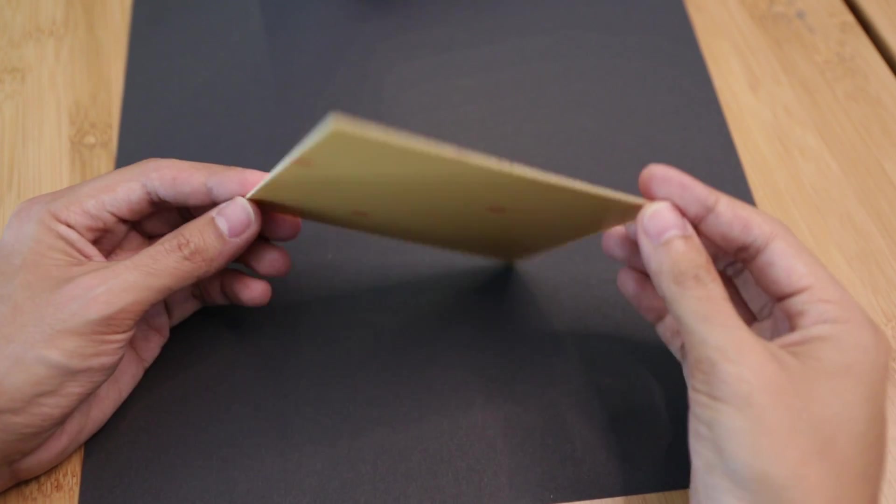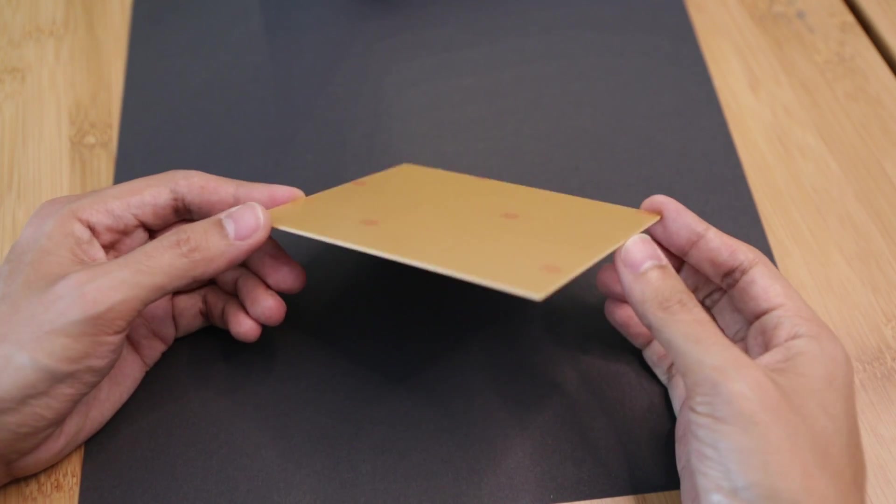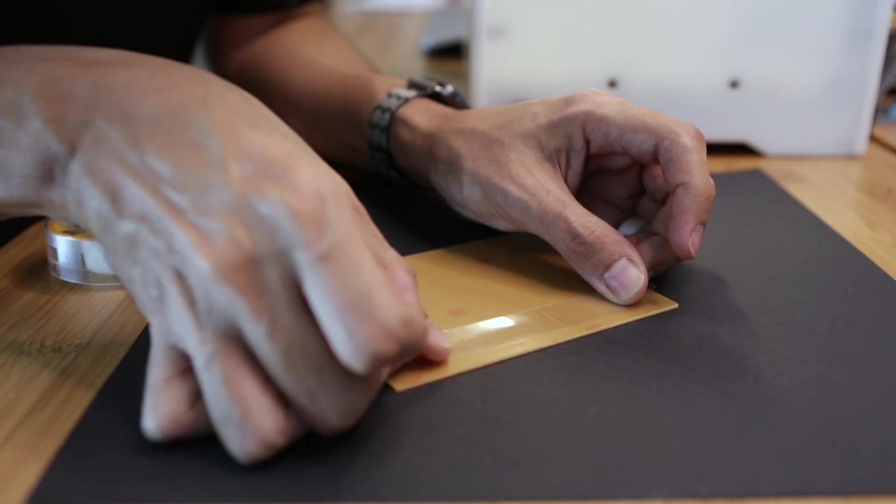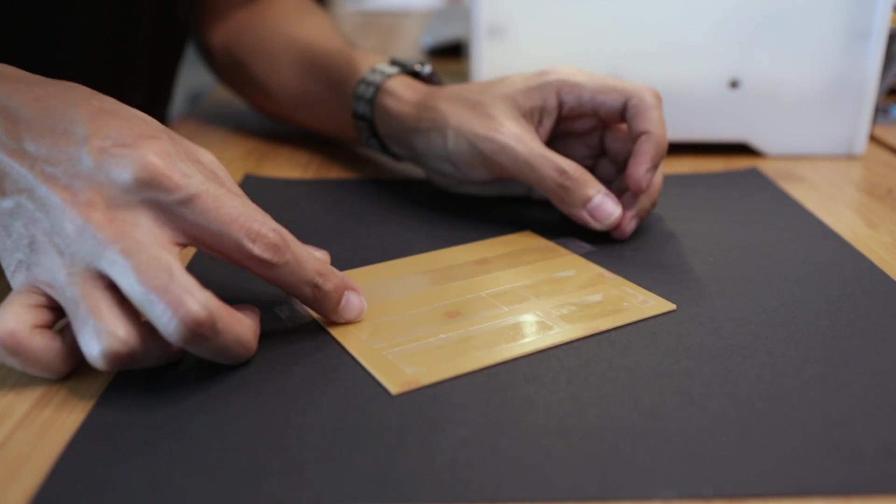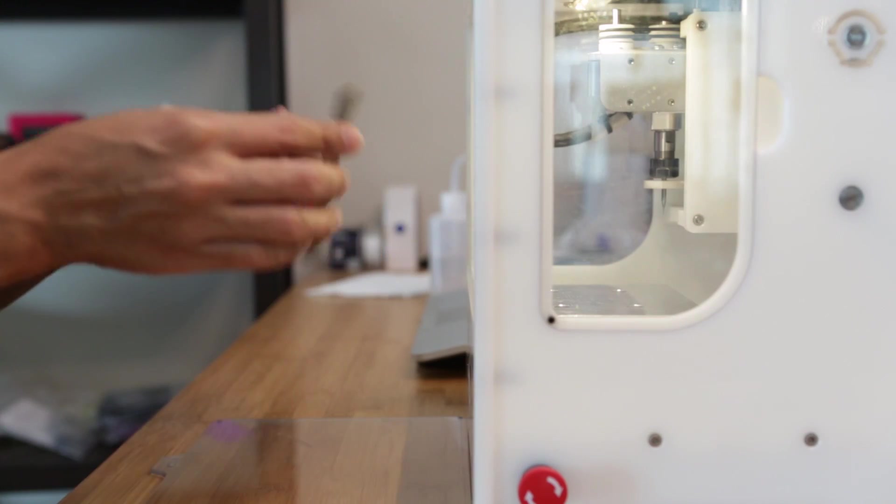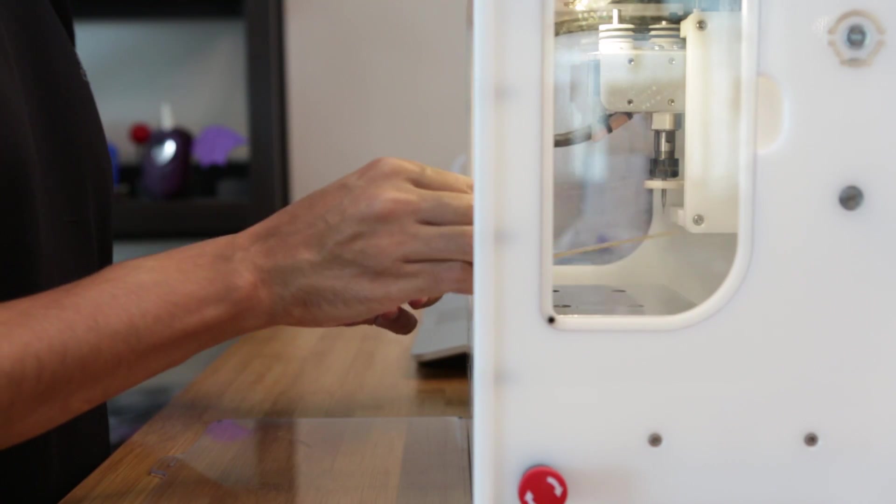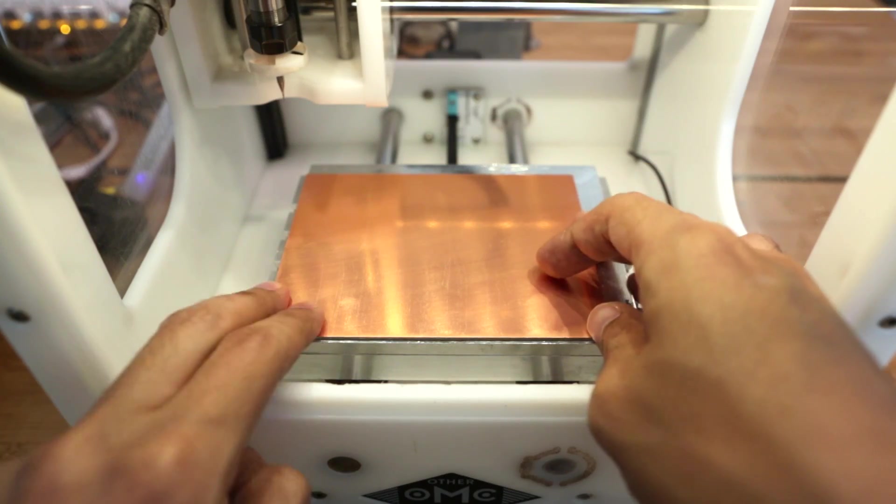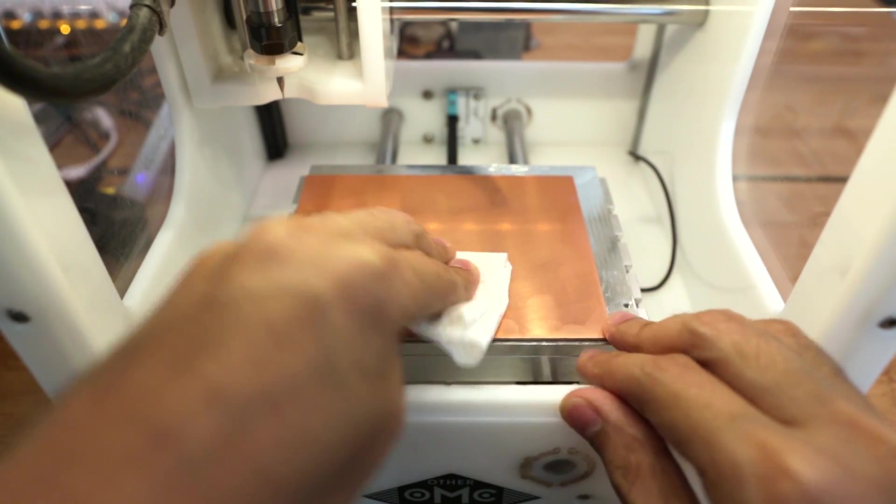To secure the blanks to the spoil board I like to use a wide roll of double-sided scotch tape. I tend to use a few strips and space them out evenly to avoid any overlapping. It's important to get good alignment with the spoil board so you gotta make sure the PCB is square with the lower left corner of the bed.